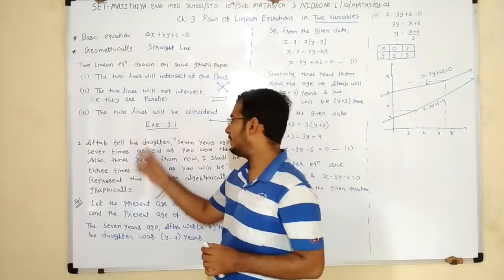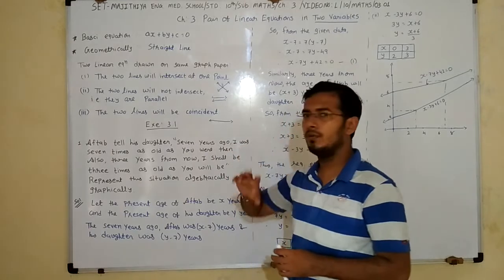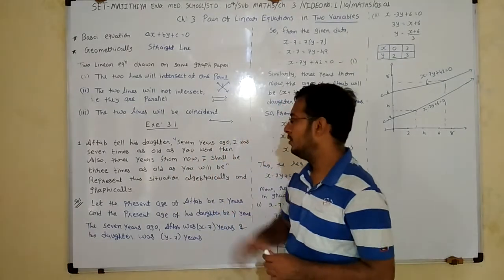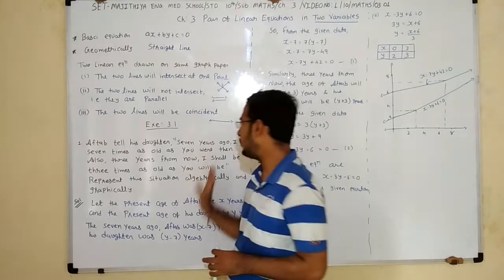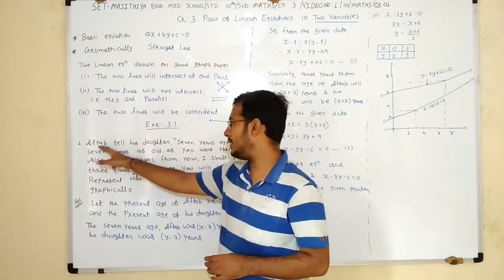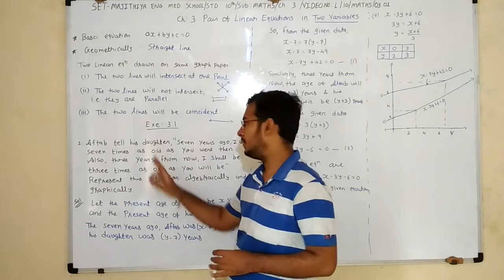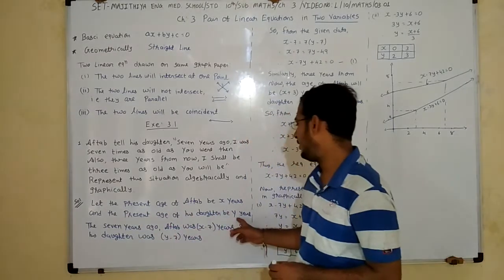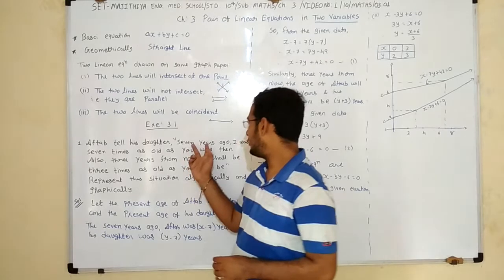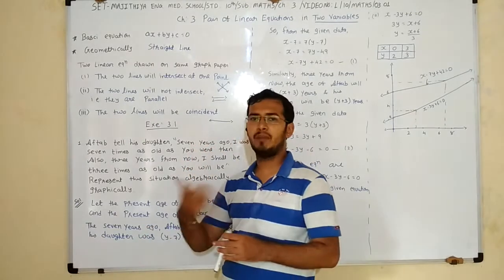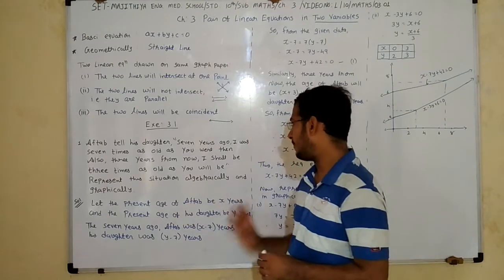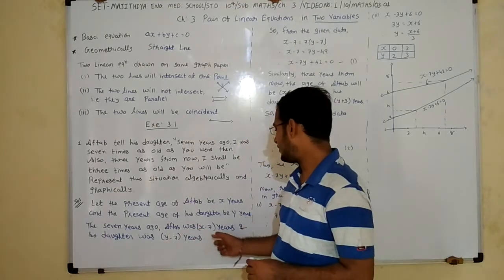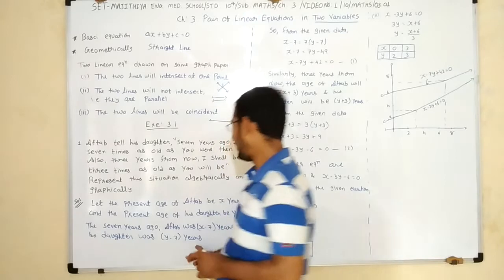Exercise 3.1. Seven years ago — ago means back, past. So first of all we assume one variable for Aftab and his daughter's age. Let the present age of Aftab be x and the present age of his daughter be y. Now the condition: 7 years ago, so we subtract 7 from the present age. Aftab was x minus 7 and his daughter was y minus 7.